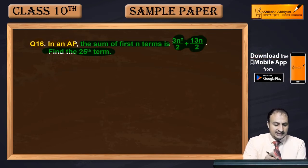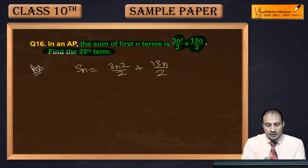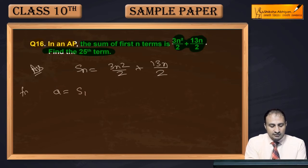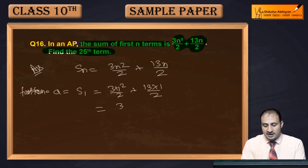S1 is equal to the first term 'a'. So S1 = 3×1²/2 + 13×1/2 = 3/2 + 13/2 = 16/2 = 8. So the first term a = 8.